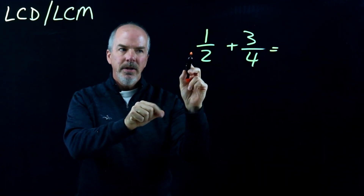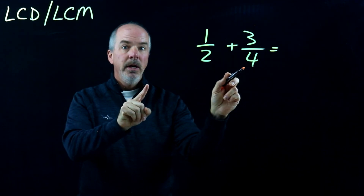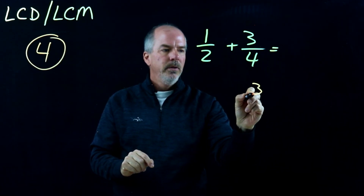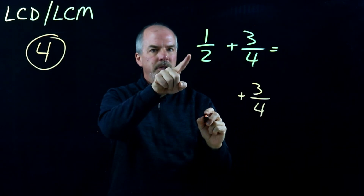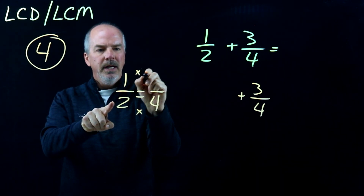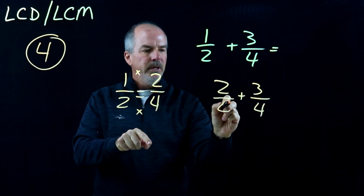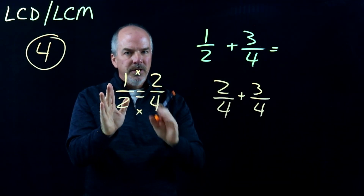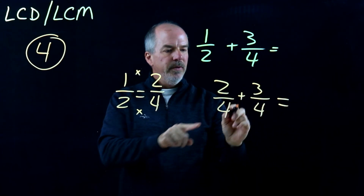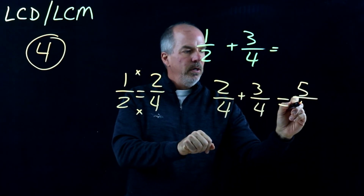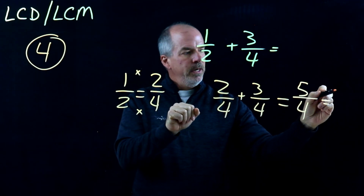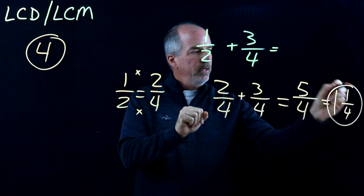1/2 plus 3/4. I know that 2 goes into 4, so I know that 4 is going to be my least common denominator. So I leave 3/4 and I'm going to change 1/2 to something over 4. Well, I multiply by 2, so I multiply the top by 2 and I get 2/4. I also know that 2 is half of 4, so I could have just said 1/2 is 2/4. So 2/4 plus 3/4 — we have a denominator of 4 now — equals 5/4. 5/4 is improper; we don't want to leave it that way. So we can get 4 out of 4, which is 1, and 1 left over. So 1 and 1/4 is our answer.